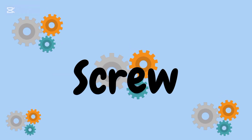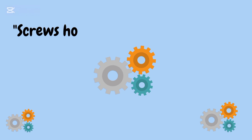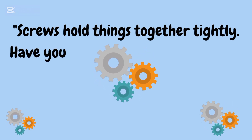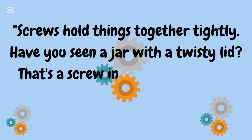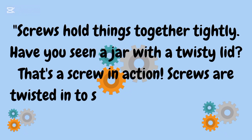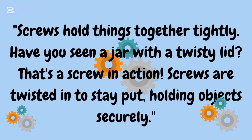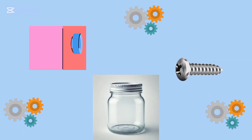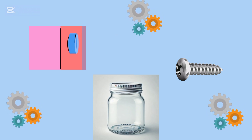Next is screw. Screws hold things together tightly. Have you seen a jar with a twisty lid? That's a screw in action. Screws are twisted in to stay put, holding objects securely. You see a picture of a jar with a screw lid.